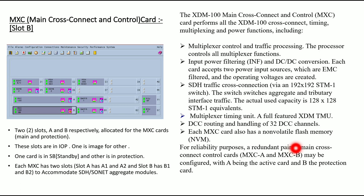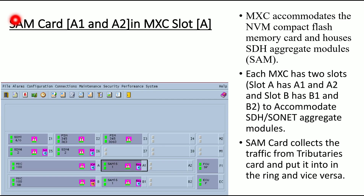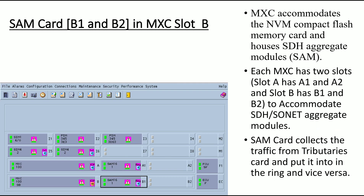For reliability, a redundant pair of MXC cards — MXC-A active and MXC-B protection — may be configured. The MXC accommodates the NVM compact flash memory card and houses the SDH aggregate module. Each MXC has slots A1, A2 and B1, B2, which accommodate SDH/SONET traffic aggregation. SAM cards collect traffic from the tributary cards and put it into the ring and vice versa.